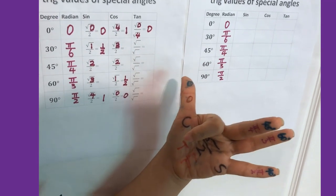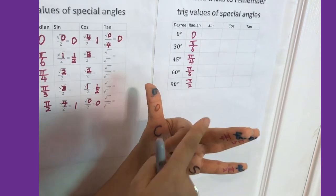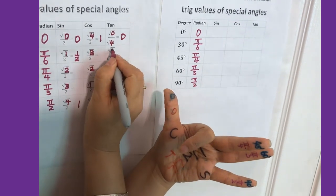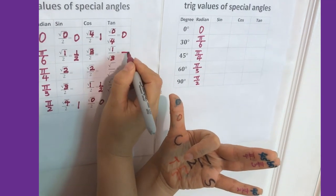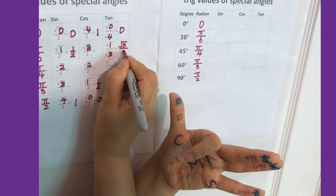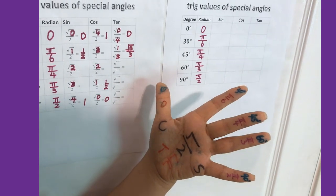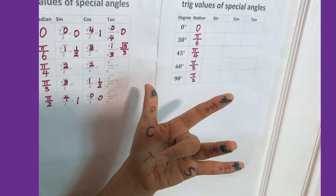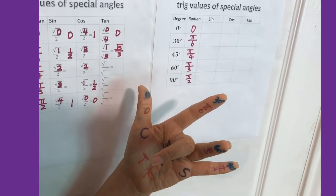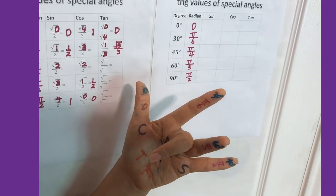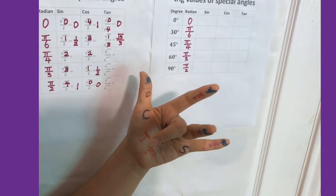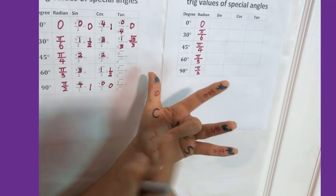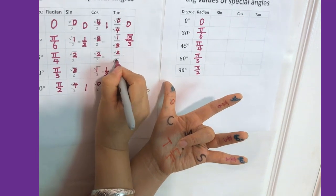Tangent 30: the division line separates above and below. You have square root of 1 over square root of 3, which simplifies to square root of 3 over 3. Tangent 45: you have square root of 2 over square root of 2, which equals 1.